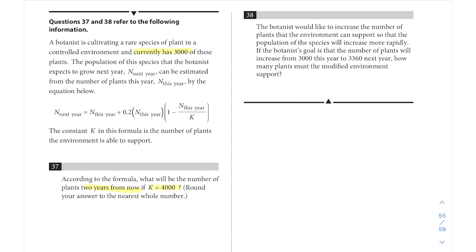Question 37 reads, according to the formula, what would be the number of plants two years from now if K is 4,000? Since this formula tells us next year, which would be one year from now, we're basically going to have to do this same formula twice. For next year, N equals N from this year, and what are we starting with? Remember in the information given, they say that currently we're at 3,000 of these plants.